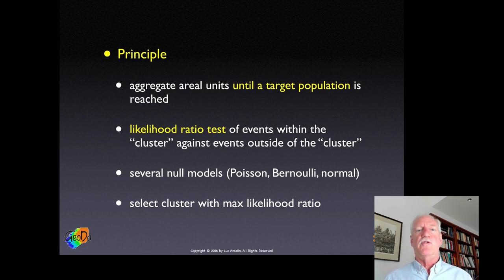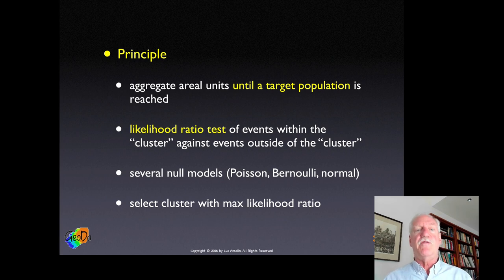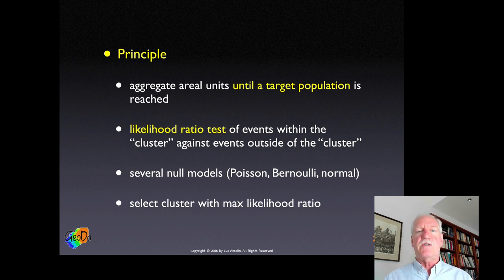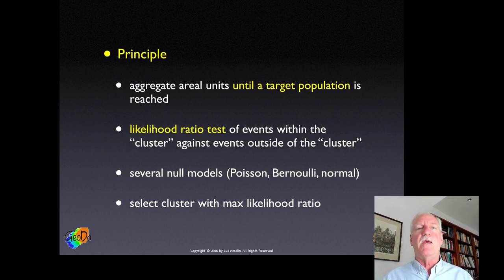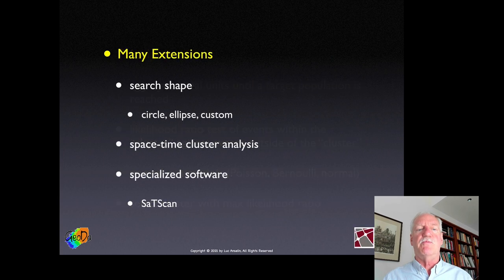A permutation-based simulation approach is used to assess a pseudo p-value for the identified cluster. Once the primary cluster is found, it can be removed from the observation set and the process repeated to find secondary clusters. This avoids the problem of a county being part of multiple clusters, which Bissack-Newell has.